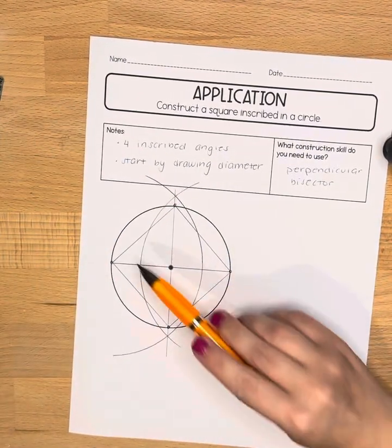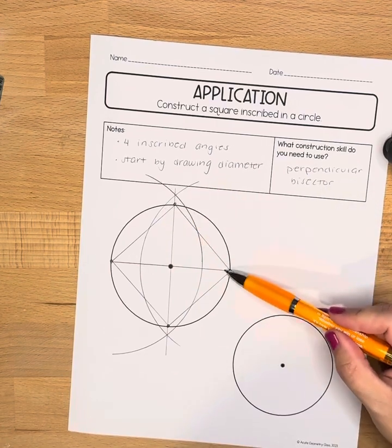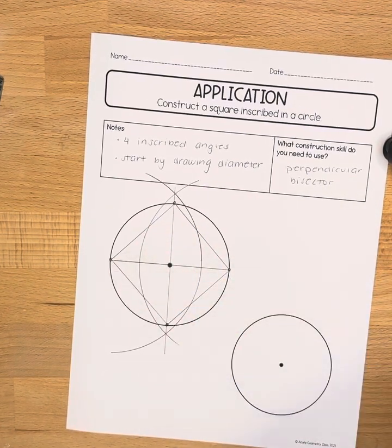And now you can see that you have your square inscribed within the given circle.